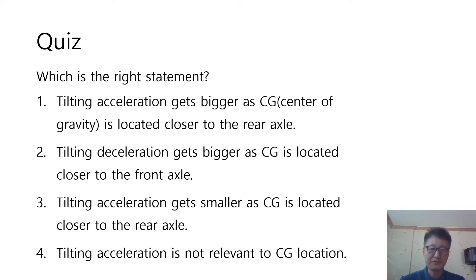Here is the quiz for you. Which is the right statement? Only one among four is correct. 1: Tilting acceleration gets bigger as CG is located closer to the rear axle. 2: Tilting deceleration gets bigger as CG is located closer to the front axle. 3: Tilting acceleration gets smaller as CG is located closer to the rear axle. 4: Tilting acceleration is not relevant to CG location. Which one is right?